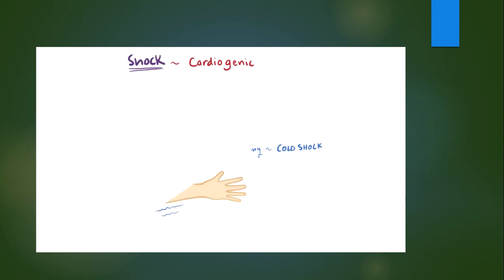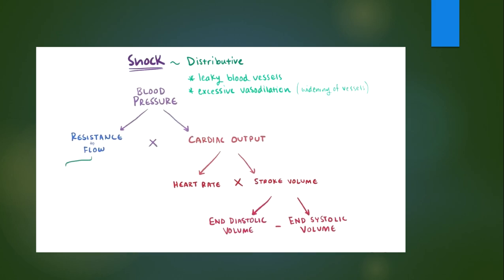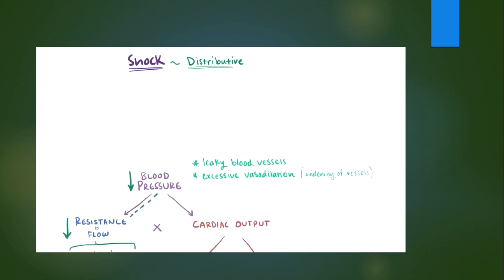The third main category of shock is called distributive shock, where there's typically a leakiness of blood vessels and an excessive amount of arterial vasodilation, or widening of the peripheral blood vessels, which remember is one of the components of vascular resistance. If arterioles dilate, vascular resistance to blood flow goes down and blood pressure goes down, leading to less perfusion and distribution of blood to organs and tissues.